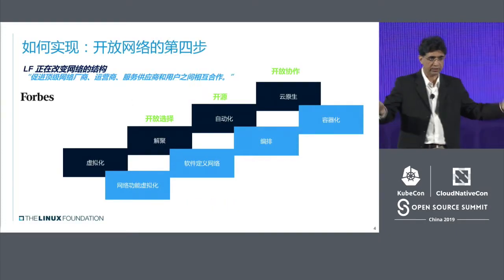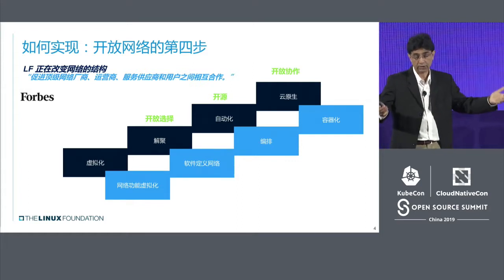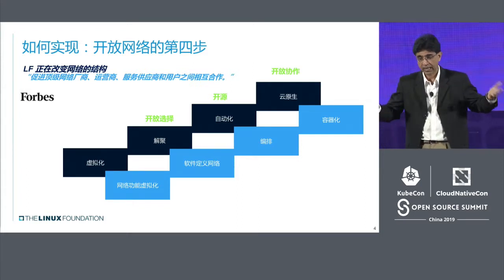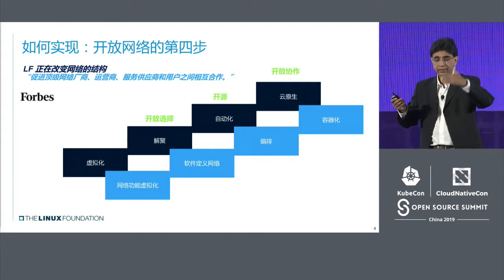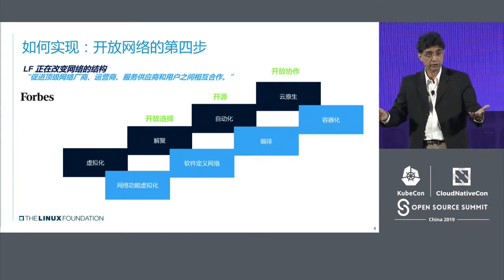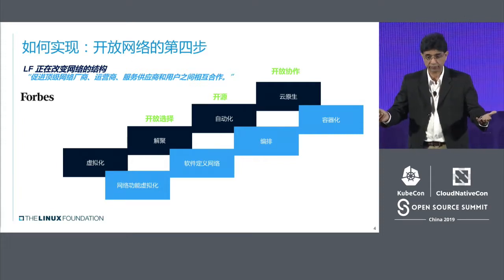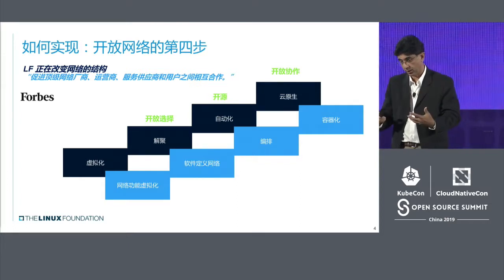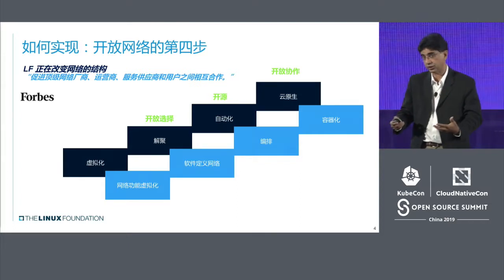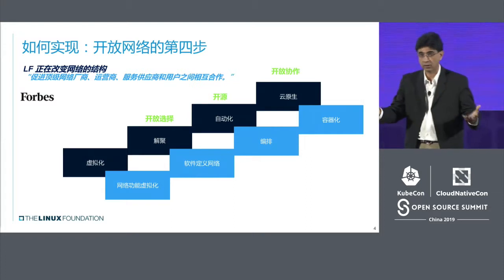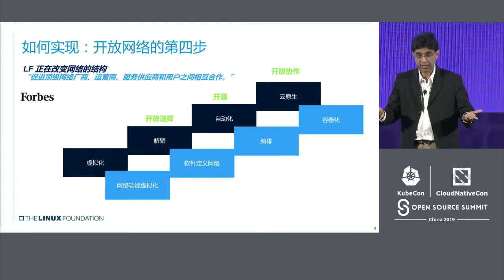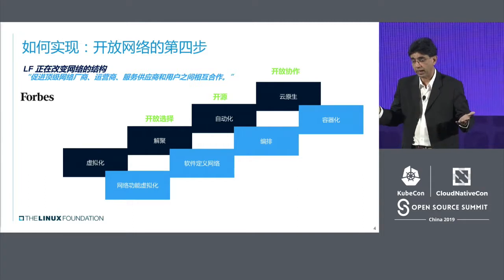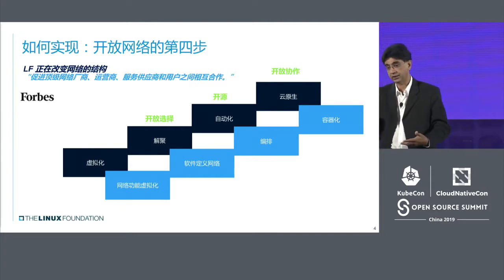The journey started with SDN and NFV several years ago. That journey led to disaggregation, where you had a choice of hardware and software. It moved to automation and orchestration of the entire network, zero touch, last year. And then this year is about open collaboration with cloud native and containerization.